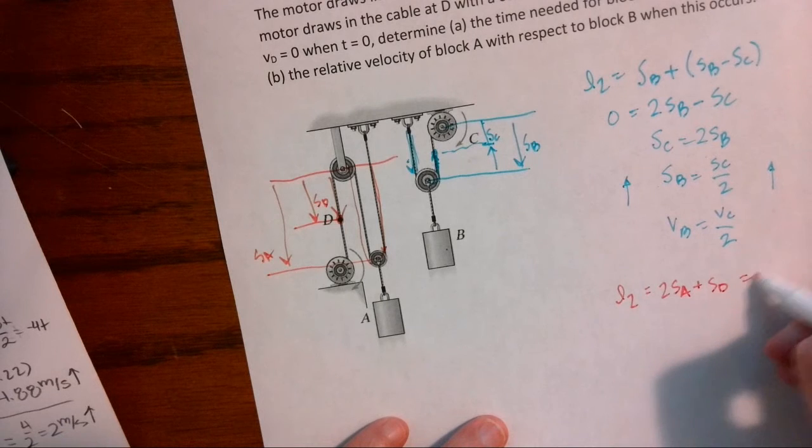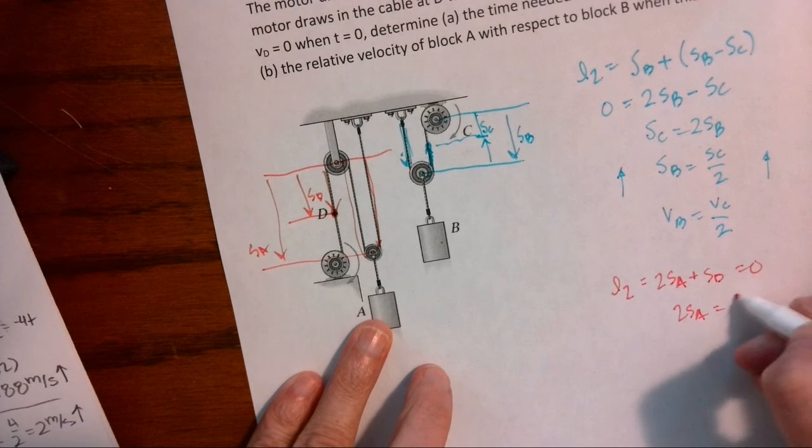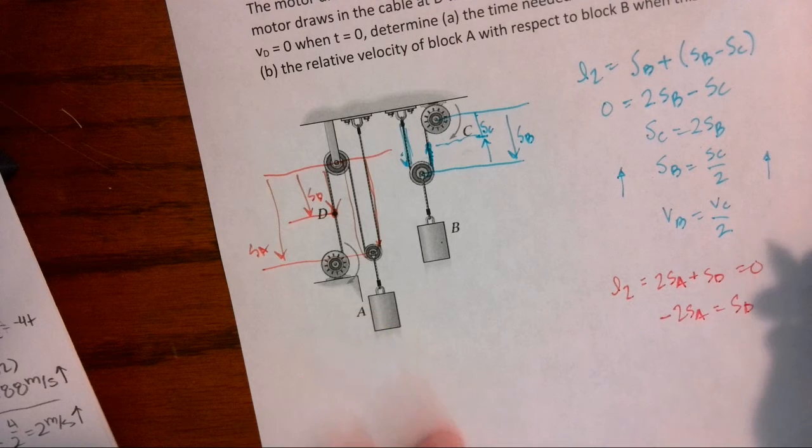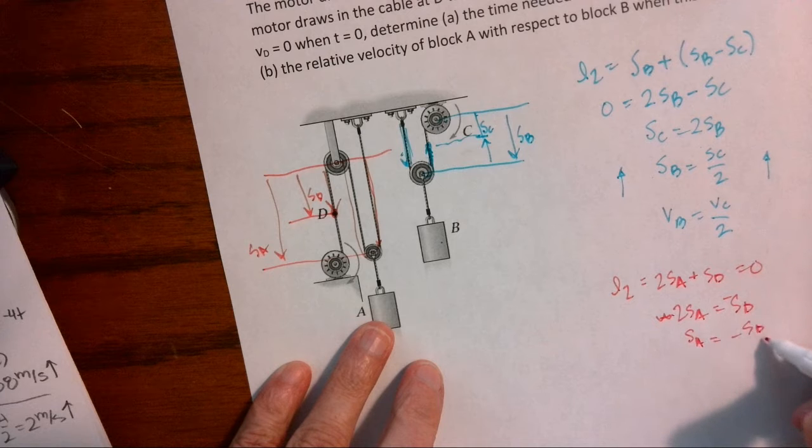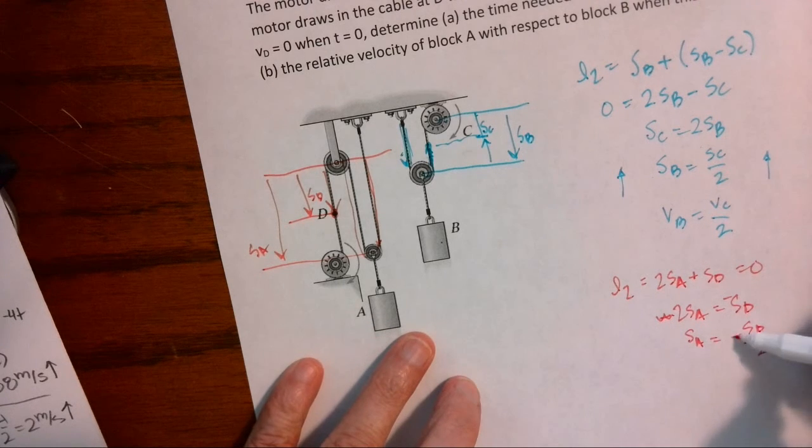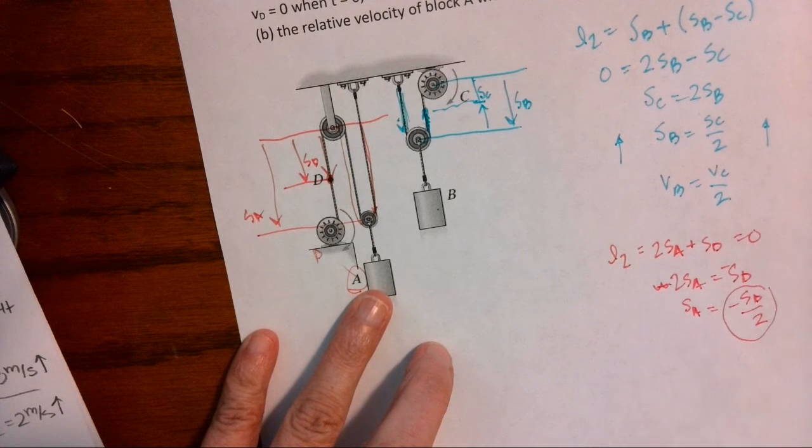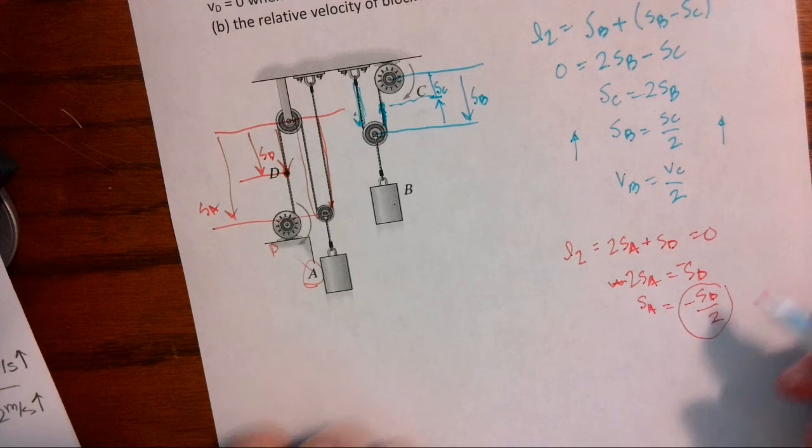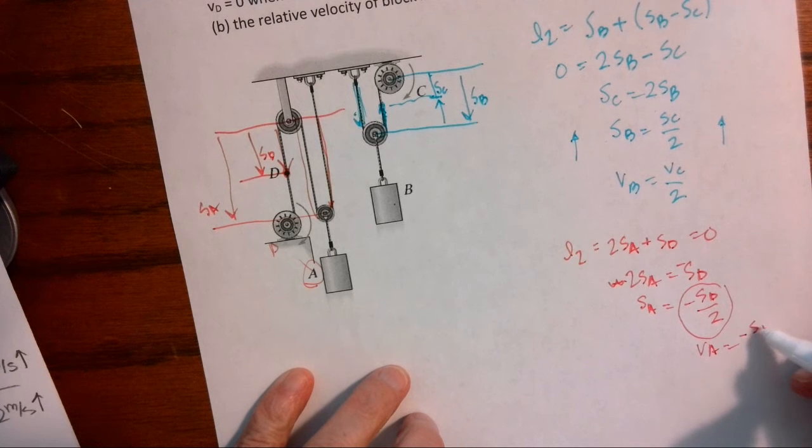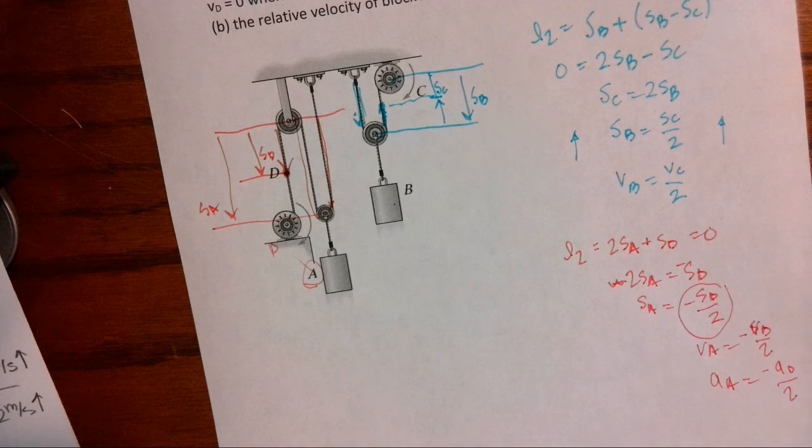I'm going to have two SA plus SD and set that equal to zero. We have two SA equals negative SD. And I'm going to keep this one negative. And actually, I'm going to pull that negative over. SA equals negative SD over two. And the reason I kept the negative over here is I need to figure out A in terms of D. So I need all of my negatives and numbers over here to make that ratio. So this also tells me that the velocity of A is negative velocity of D over two. And the acceleration of A is negative acceleration of D over two. So we've got our relationships now between A and D.